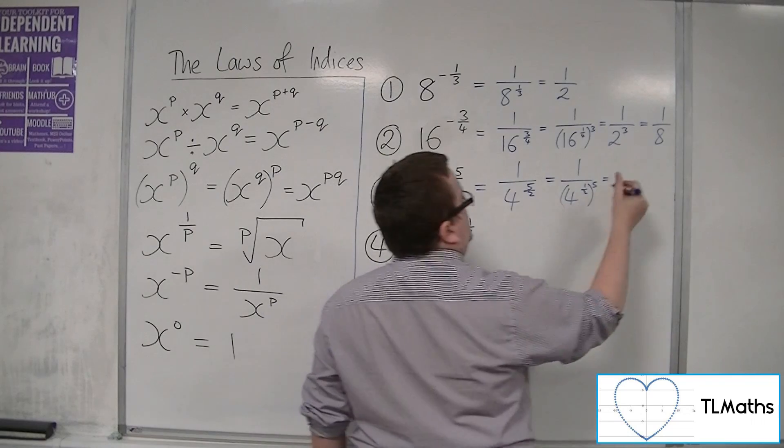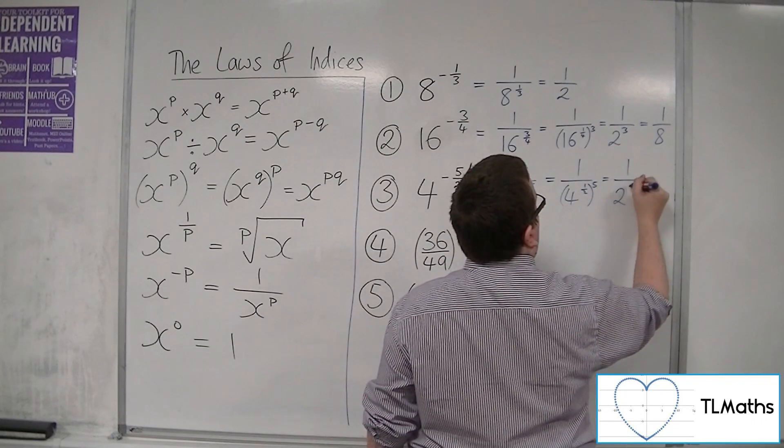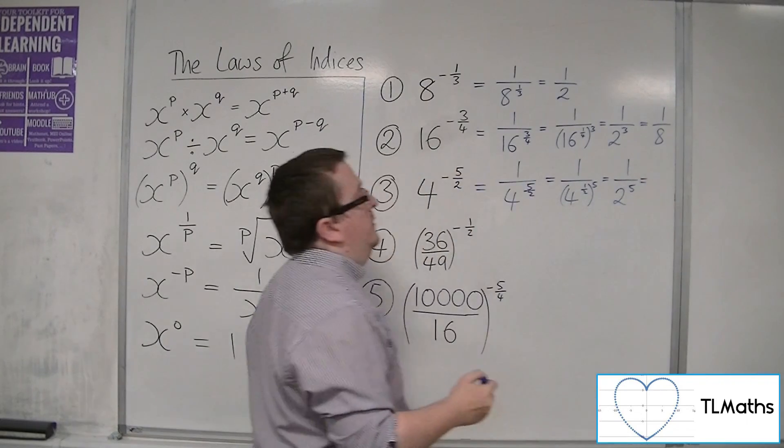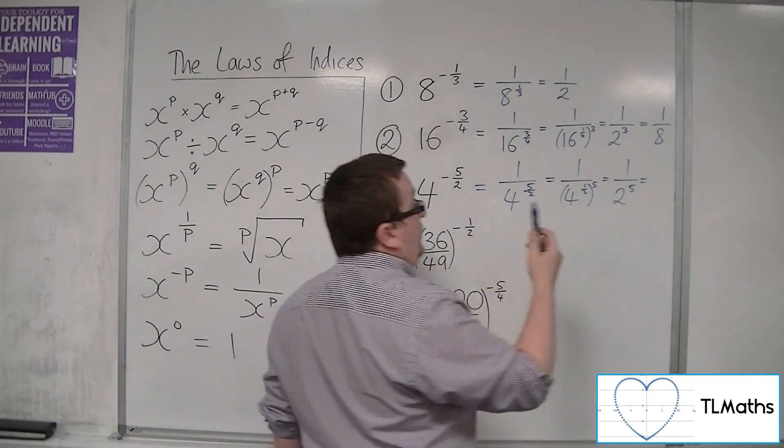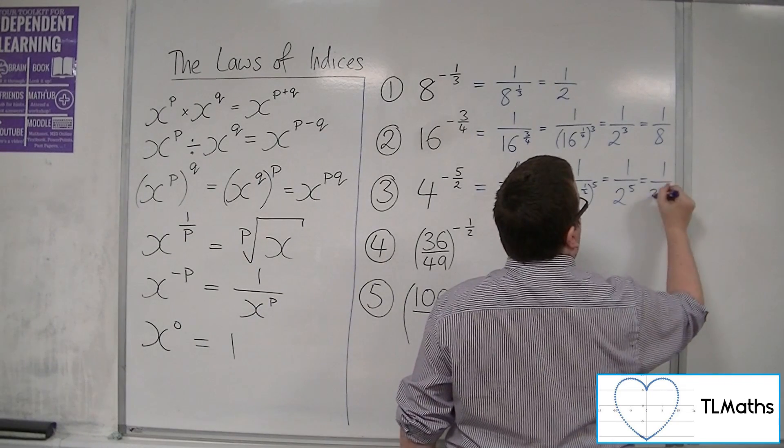4 to the half. The square root of 4 is just 2. So that's 1 over 2 to the 5. So 2 to the 5 is 32. So that's 1 over 32.